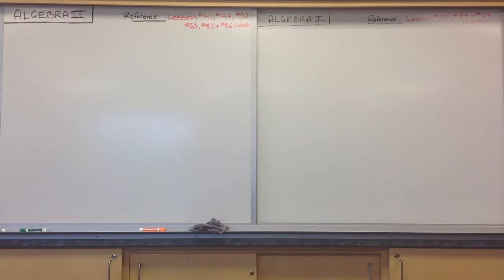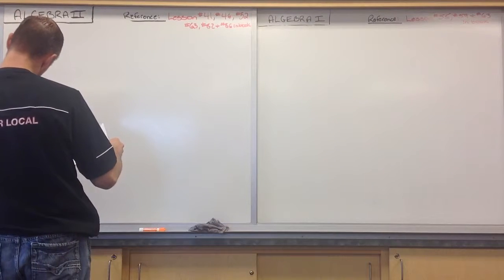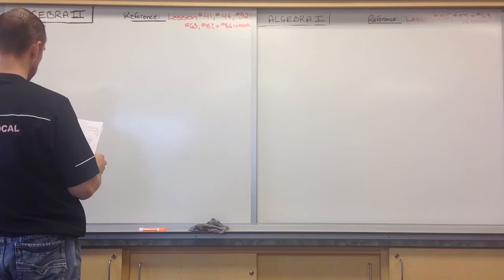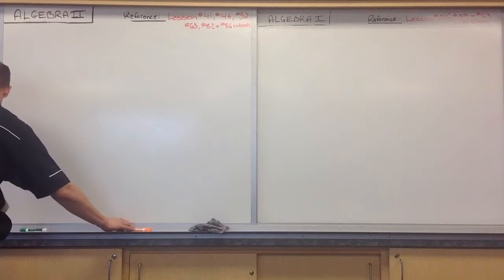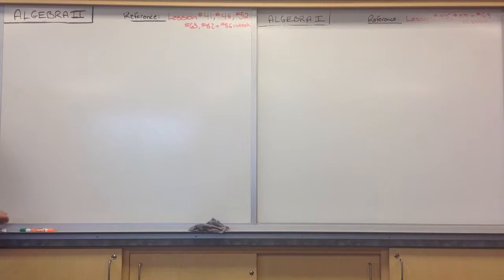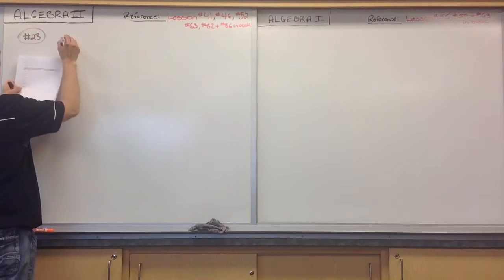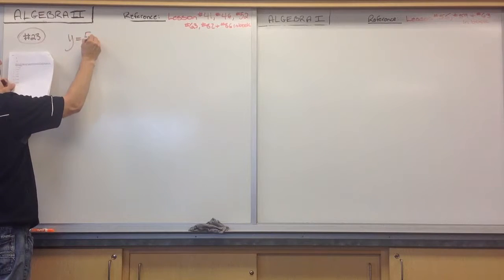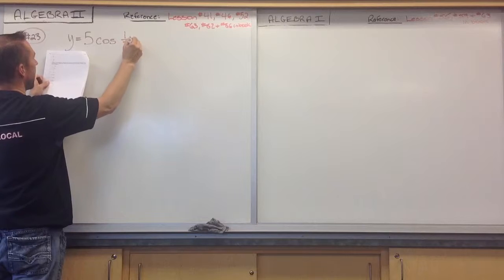Let's go through number 23 on 18B. We'll use that to segue into material that builds off of this. So we're on number 23, and we're trying to graph this cosine function. We have y is equal to 5 cosine of 1 half x.